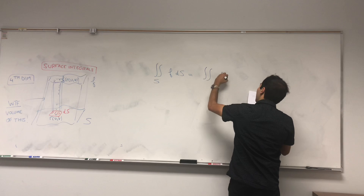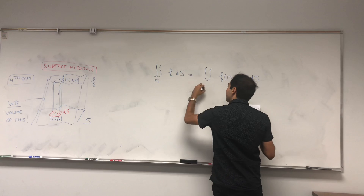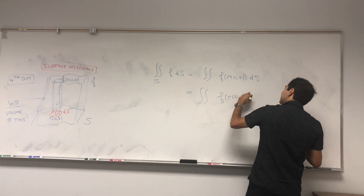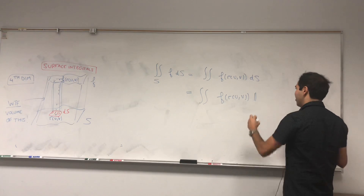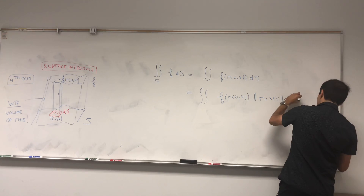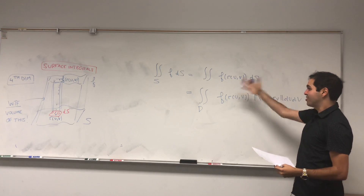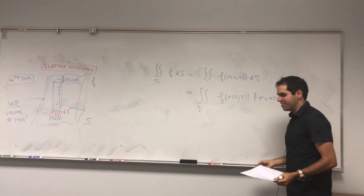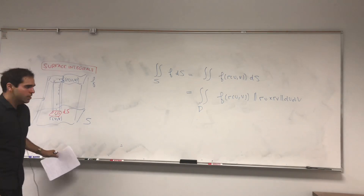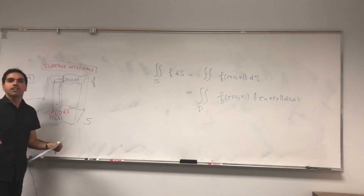Each cylinder has height F of R(U, V) and base area dS. So it's the double integral of F(R, U, V) dS. And remember from last time, we found that dS is just the area of the parallelogram, which is just |R_U cross R_V| dU dV. So this is the surface integral of F on that surface. And it's indeed a volume because dS is an area — multiply an area times the height and you get a 3D volume.